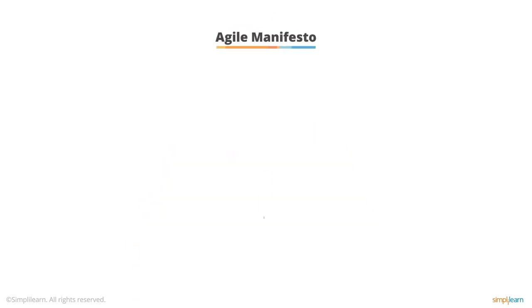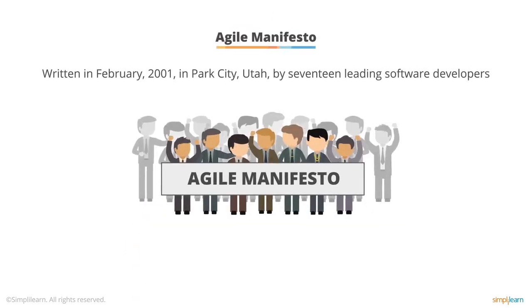Agile techniques and best practices began to emerge and gain prominence in software development projects. This led to a meeting in February 2001 in Park City, Utah, where 17 leading software developers wrote what has become known as the Agile Manifesto.